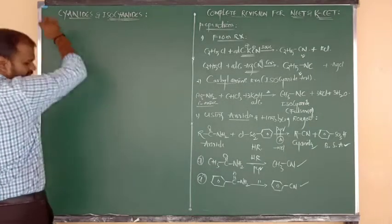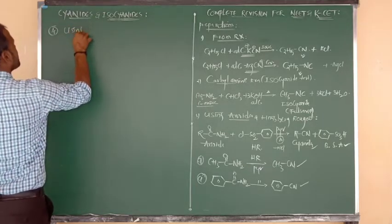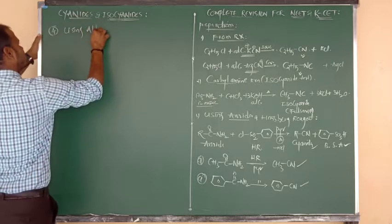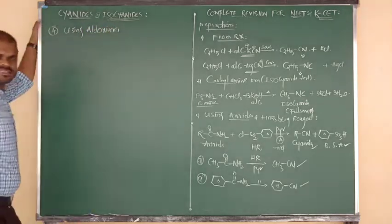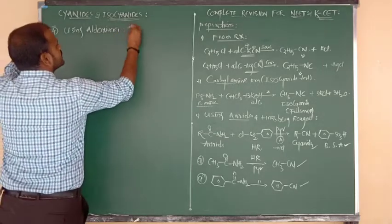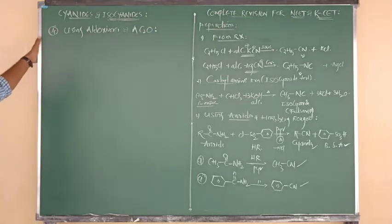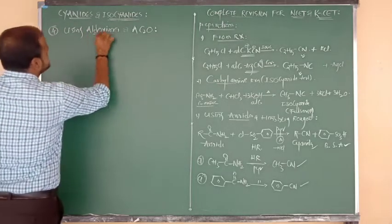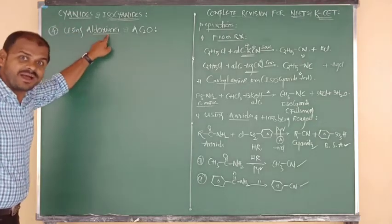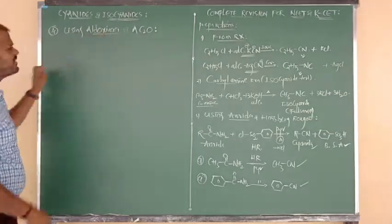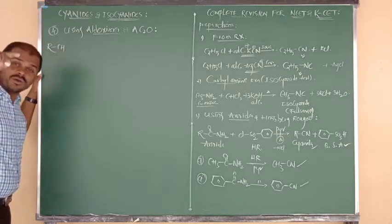Method four: using aldoximes and acetic anhydride (Ac2O). When an aldehyde reacts with hydroxylamine (NH2OH), after loss of water, it forms an aldoxime — structure R-CH=N-OH.